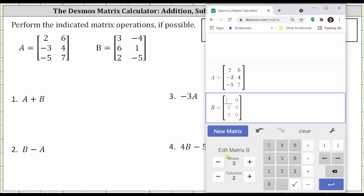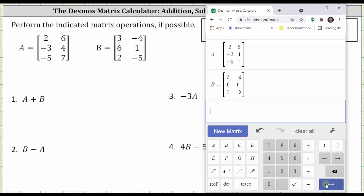Change the number of rows to three. Enter the elements: three, right arrow, negative four, right arrow, and so on. Enter. Double-check we have the elements correct, which we do.